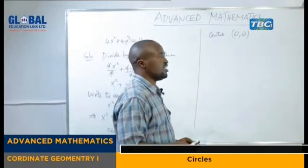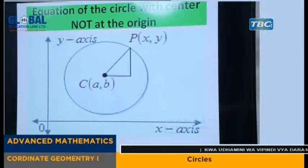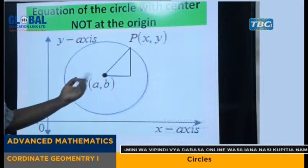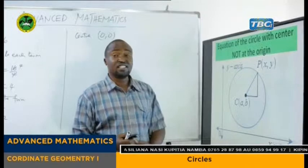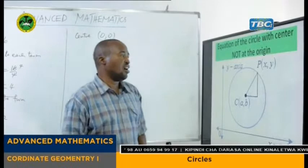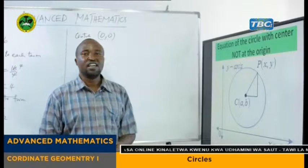So my dear students, let us proceed with the equation of the circle with the center not at the origin. If you can look here we have a circle, but this time the center is not at the origin. The origin is here at (0, 0), but here the center is somewhere else. Let us see how we are going to get the general equation of the circle with the center not at the origin.